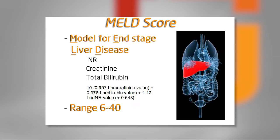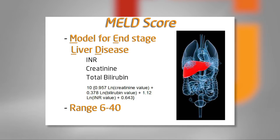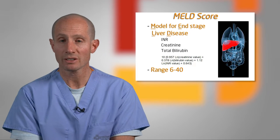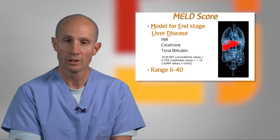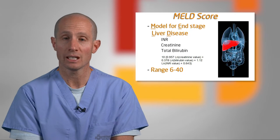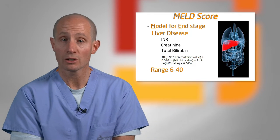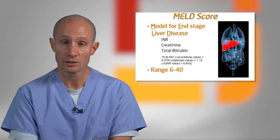A very commonly asked question is: what is the MELD score and how does it apply to me? How does it affect my place on the waiting list? The MELD score stands for the Model of End-Stage Liver Disease, and it's an equation made up of three variables: serum bilirubin, creatinine, and INR. The range of the MELD score is between 6 and 40 — 6 being a normal score, and 40 being associated with a patient who is extremely sick, often in the intensive care unit, due to the complications of their liver disease.